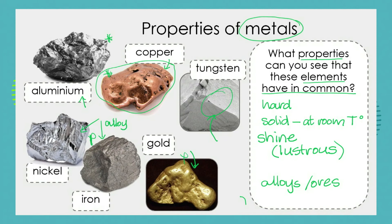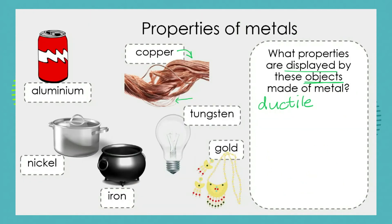Tungsten, although it sits here as a big lump of metal, is extremely ductile. It can be pulled into very very fine filaments to be put inside incandescent light bulbs.